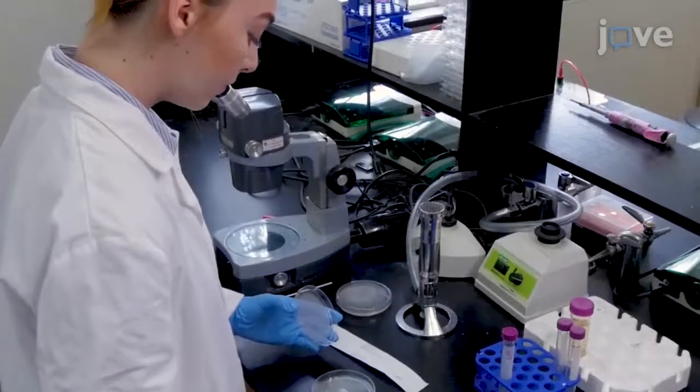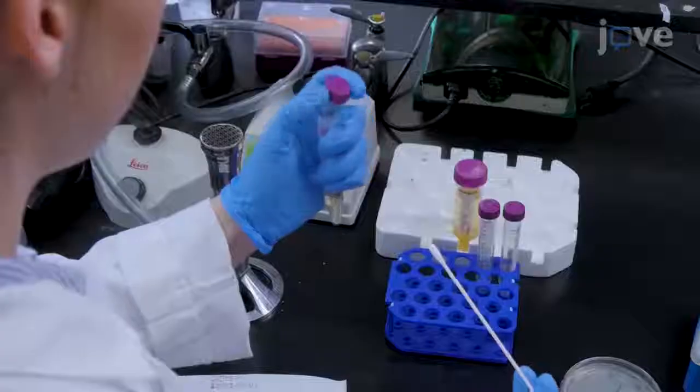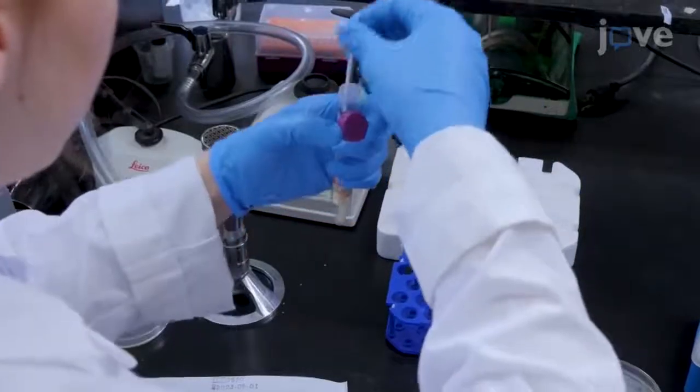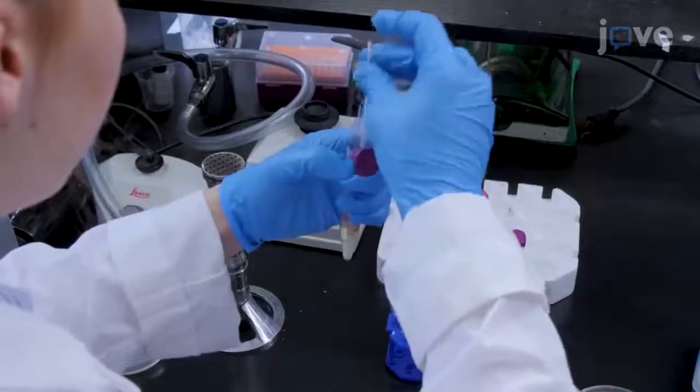The next morning, use a sterile applicator to collect GC colonies from each plate, and resuspend each swab in warm broth supplemented with 4.2% sodium bicarbonate and 1% Kellogg solution.